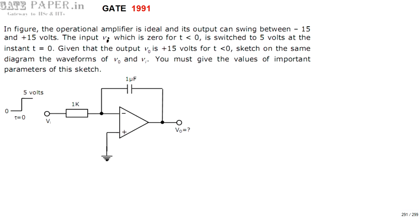Hello, we are discussing the GATE 1991 ECE paper and this question is related to analog circuits. The op-amp is ideal and the input is changing from 0 to 5 volts at t equal to 0. The input suddenly changes from 0 to 5 volts and remains at 5 volts. Then what will be the output waveform?